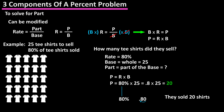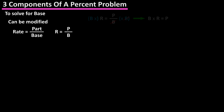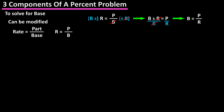To solve for base, we can modify our original formula of rate equals part over base. We multiply both sides by base to get base times rate equals part. Then we divide both sides by rate, which cancels the rate out on the left side, and we have base equals part over rate.